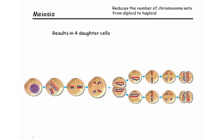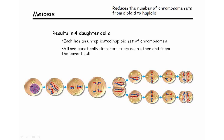Meiosis ultimately results in four daughter cells. These daughter cells would be the gametes — egg or sperm depending on whether we're talking about a male or female. These daughter cells are all going to have an unreplicated haploid set of chromosomes, because meiosis is a reductive division that cuts the number of chromosomes in half, also cutting ploidy in half. Additionally, all of these daughter cells are going to be genetically different from each other — no two will be the same — and they're also going to be different from the parent cell. One of the big reasons they end up different is due to the crossing over process that occurs during prophase one.